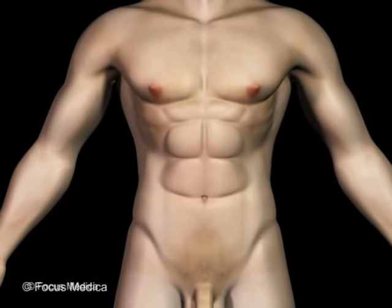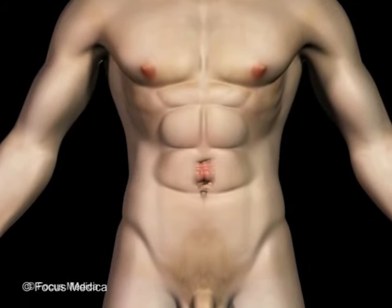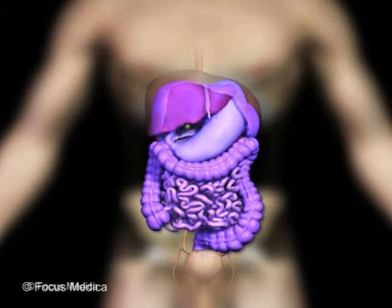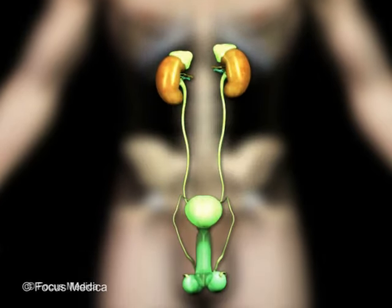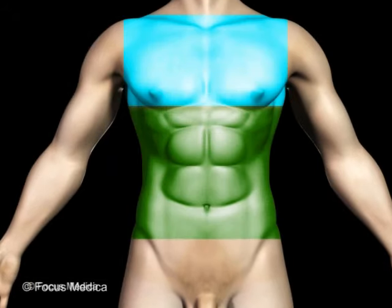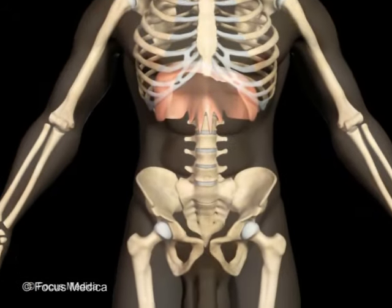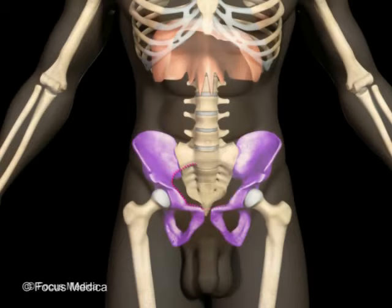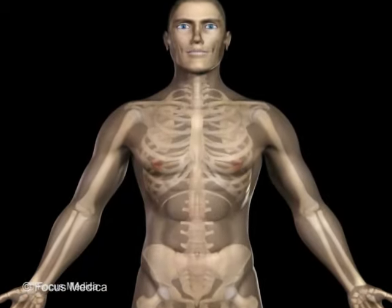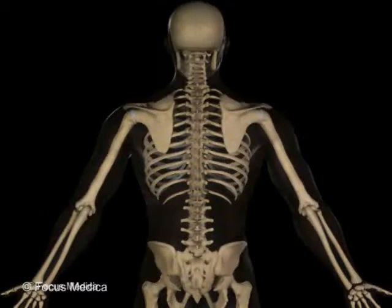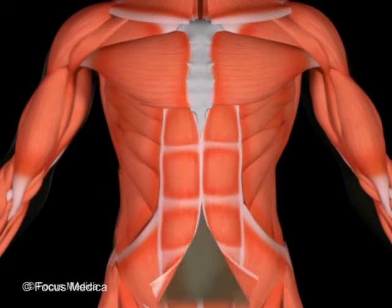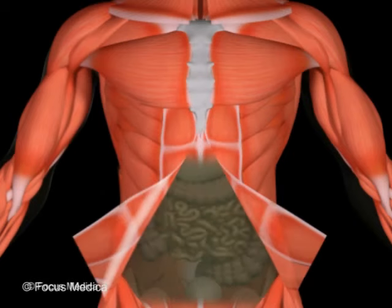The abdomen is a large cavity that houses important organs, especially those related to the digestive and urinary system. It is separated from the thorax by the diaphragm and from the pelvis by the pelvic inlet. While the vertebral column supports the abdomen from behind, the walls of the abdomen are made up of muscles and fascia which support and protect the delicate organs within.